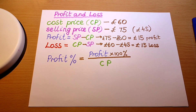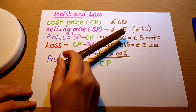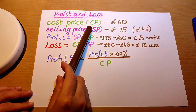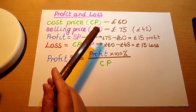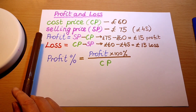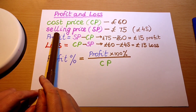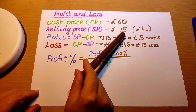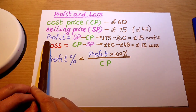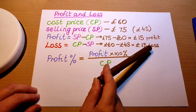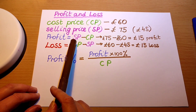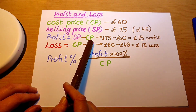Let's look at some examples. Let's imagine that I bought a bag for 60 pounds — that's going to be my cost price, CP for short. I bought that bag from a wholesaler and now I want to resell it to make some money. I'm selling this bag for 75 pounds — that's the selling price — and I'm getting a profit of 15 pounds. So profit is calculated by selling price take away cost price.